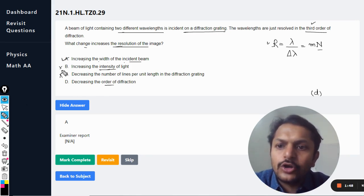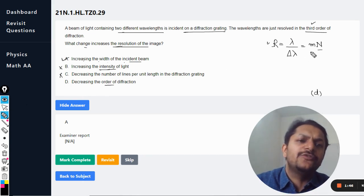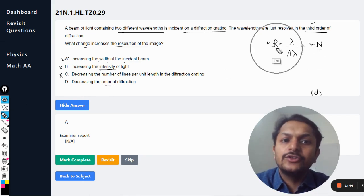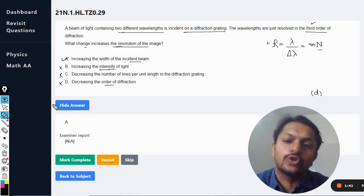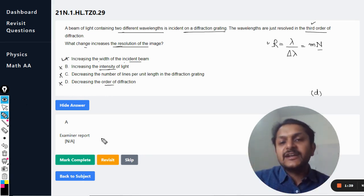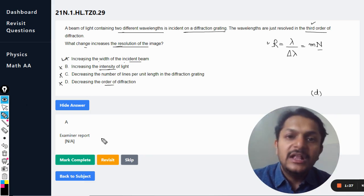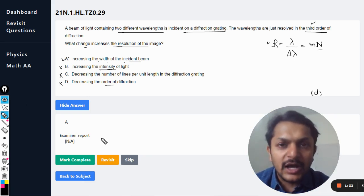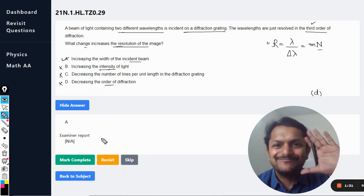Decreasing the order of diffraction. So clearly, if you are decreasing m, the resolution is decreased. There is no doubt about it. So D is also wrong. So my dear students, this is the explanation for this very question. I believe you will understand this, and if there is any other problem, please do ask in the comment section. All the best, bye.